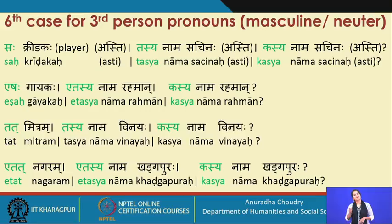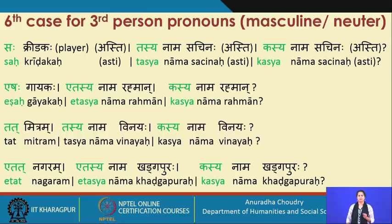When it is near, it is etat nagaram — this town. Etasya naam Khadgapuraha. Kasya naam Khadgapuraha. Now I recommend you close your eyes and I will give you the forms to see if you can produce the genitive yourself.